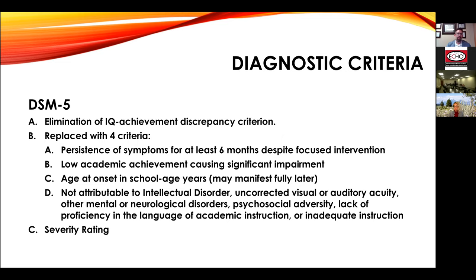The DSM-5 eliminated the IQ-academic achievement discrepancy. You no longer have to have a clinically significant discrepancy between overall cognitive ability and academic achievement — there doesn't have to be two standard deviations between ability to learn and academic achievement. Instead, the DSM-5 replaced that criterion with a child who has learning difficulties that persist for more than six months, and where low academic achievement causes clinically significant impairment.